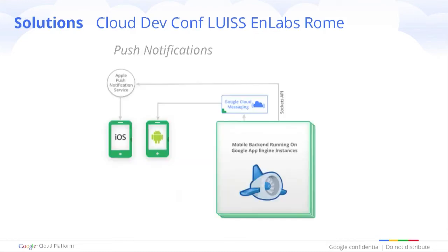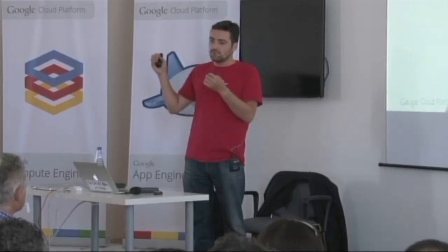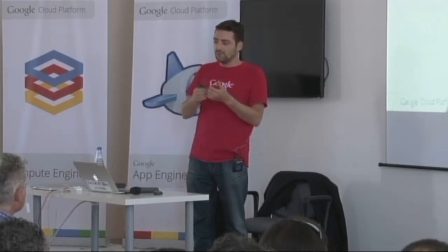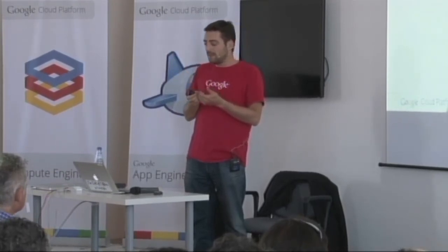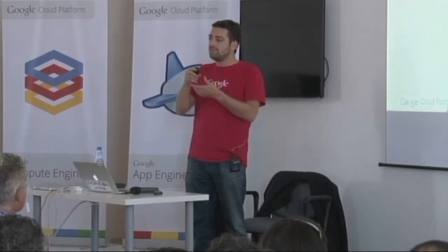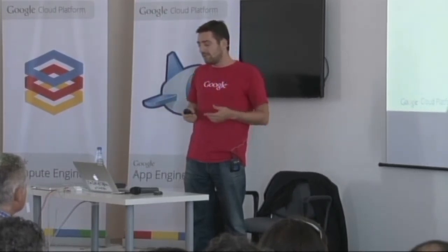Push notifications are also really key — something we've been using a lot at Google since day one. For Android with Google Play, formerly the Android Market, when we wanted to push application updates so your phone downloads them automatically, we've been using that type of technology. So with cloud messaging, the phone stays connected with the cloud and you can push a notification from your app backend to users — very useful in a gaming environment or for chat.